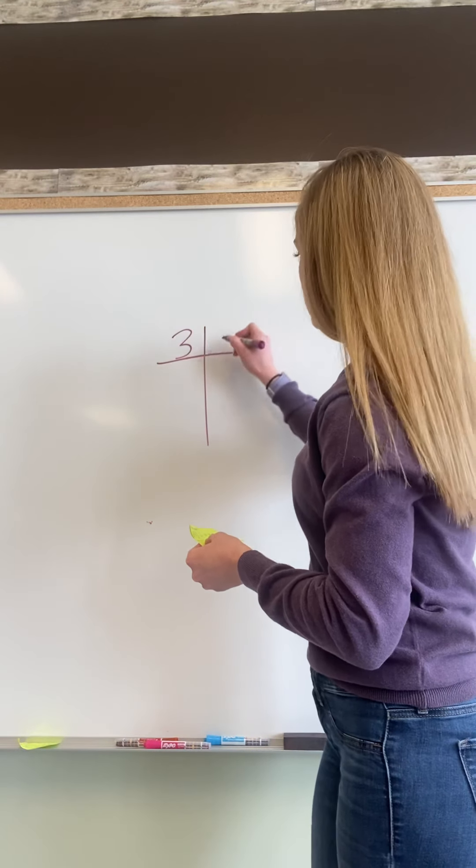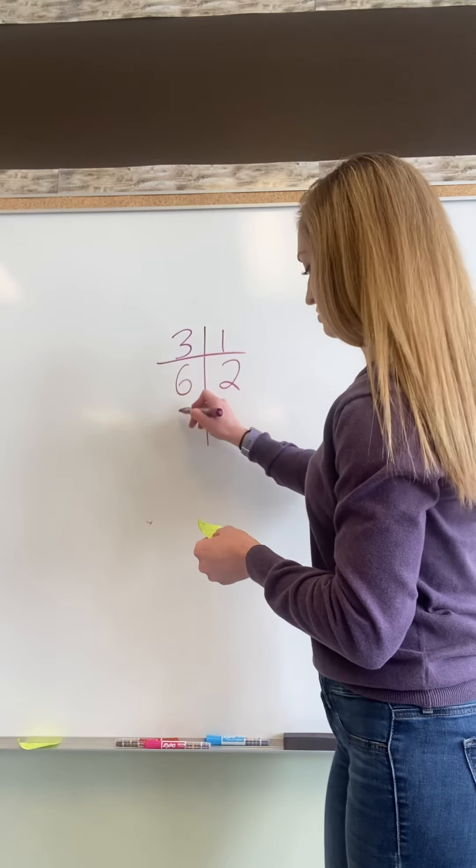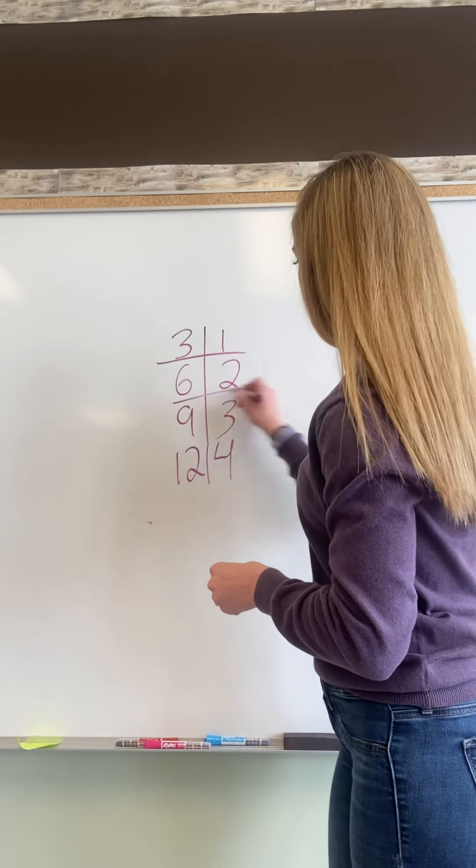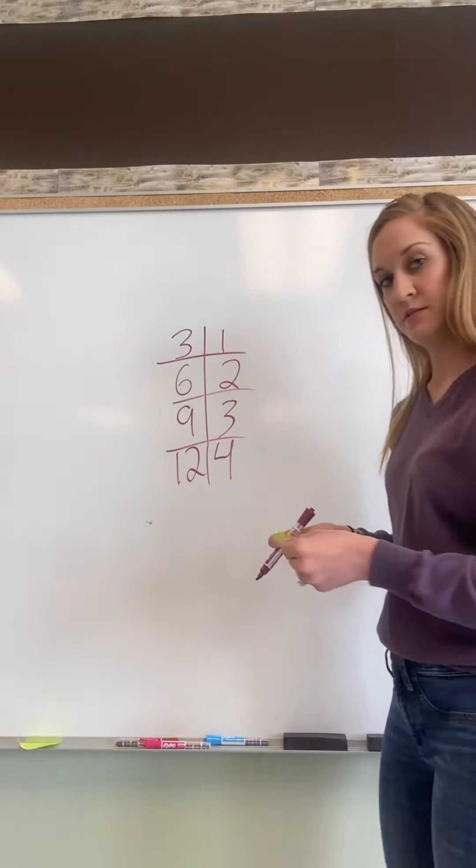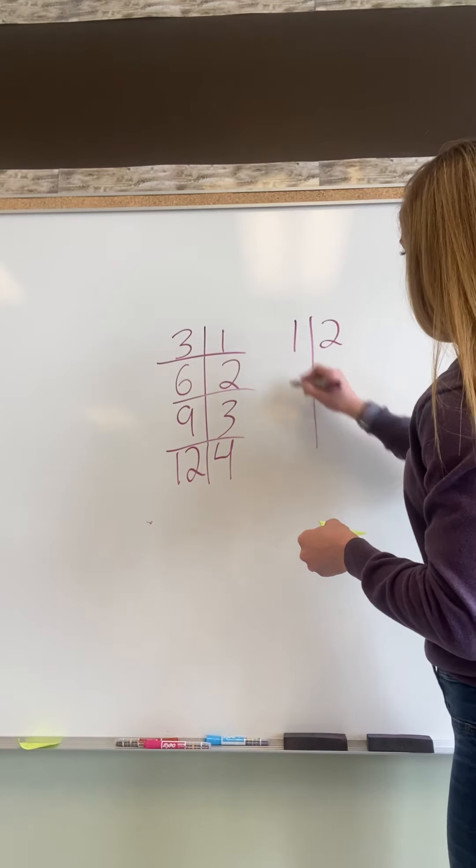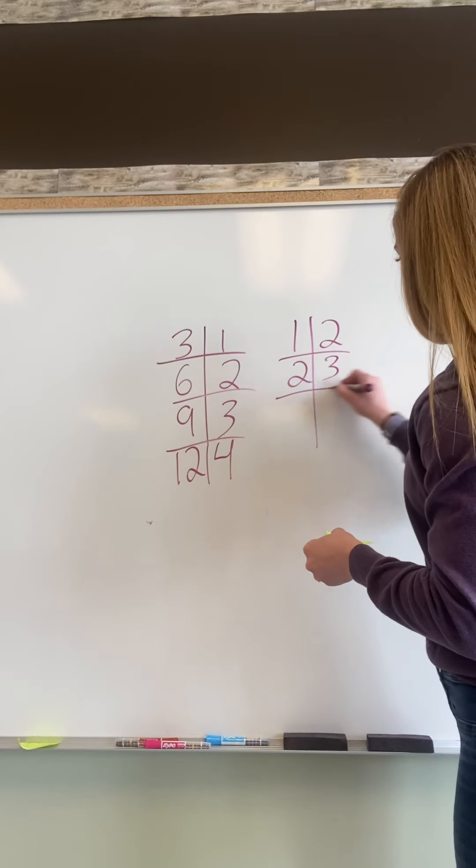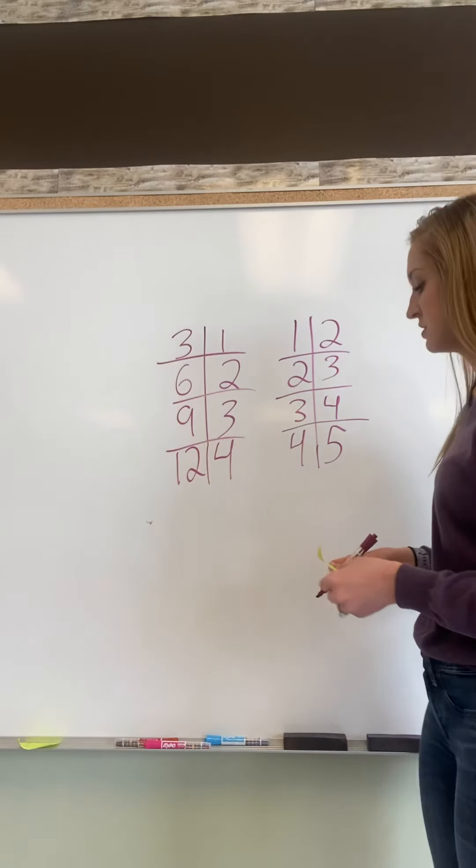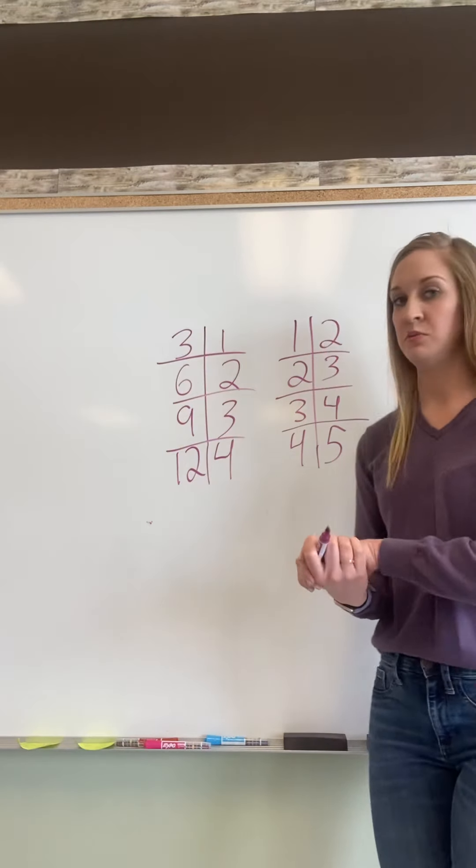So three, one, six, two, five, three, twelve, four. Okay, so that. And this one. Okay, so let's compare these two and see if they're a ratio table or not.